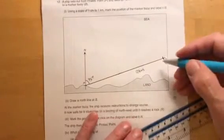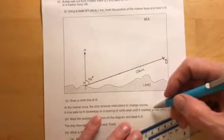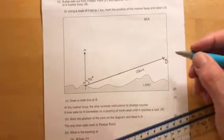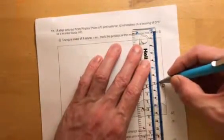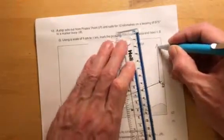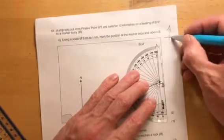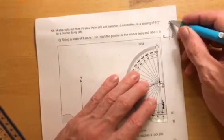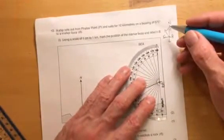At the Marker Buoy, the ship receives instructions to change course. We've got it now, sails for 6 kilometres on a bearing of north-west until it reaches a rock. North-west from the buoy. Let's draw a north line in. North-west is over this way, so it's 45 degrees this way.